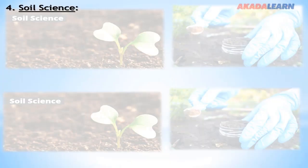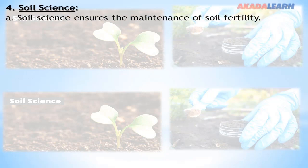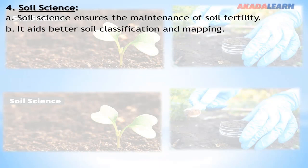Soil Science: Soil science ensures the maintenance of soil fertility. It aids better soil classification and mapping for crop distribution. Soil science also helps in erosion control methods and moisture conservation.